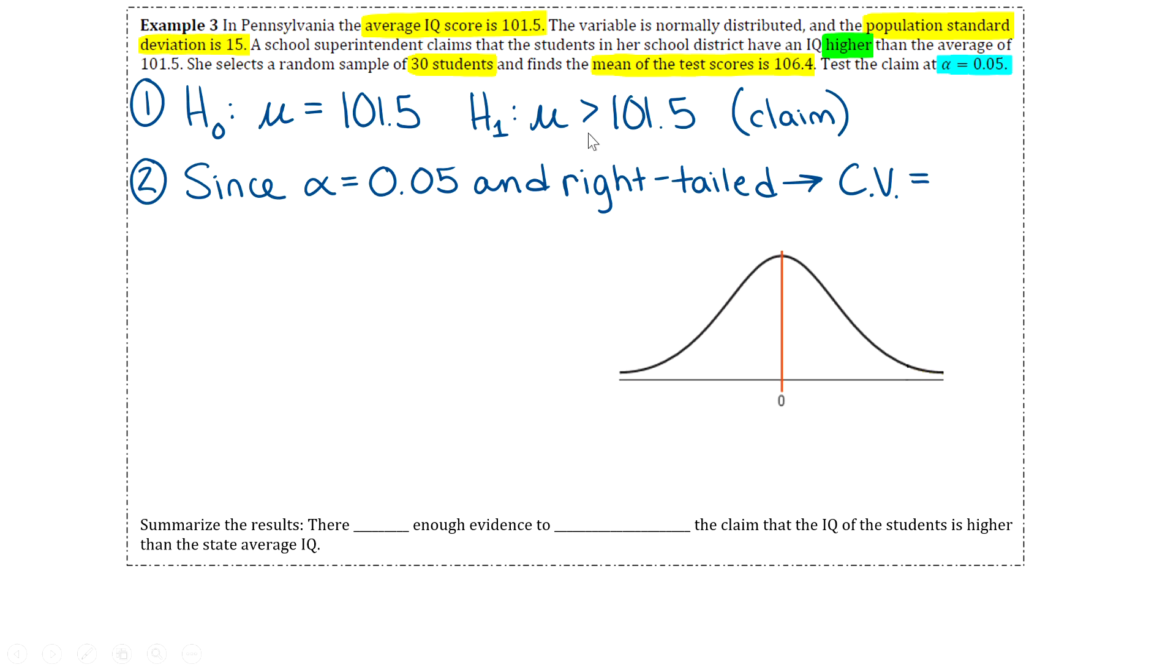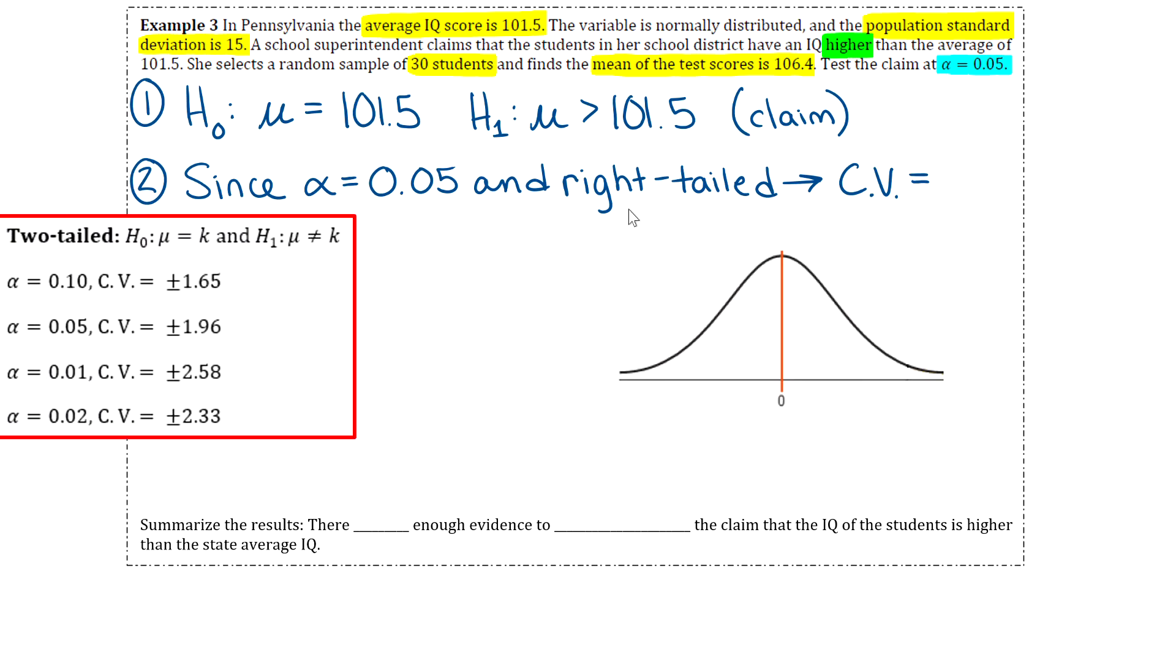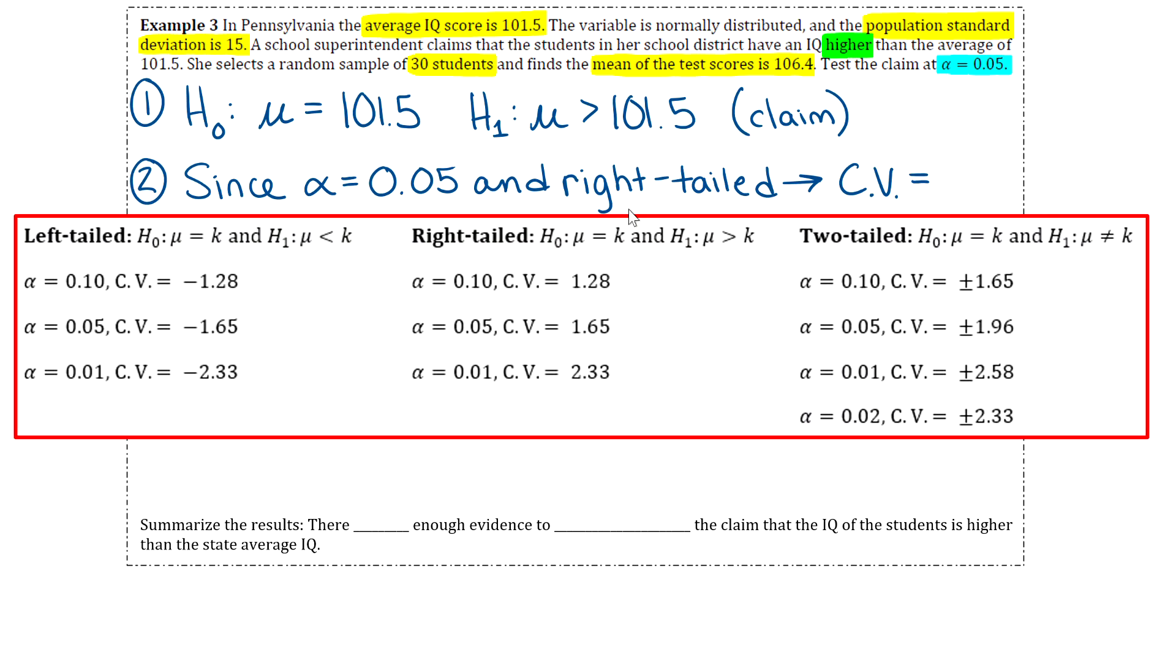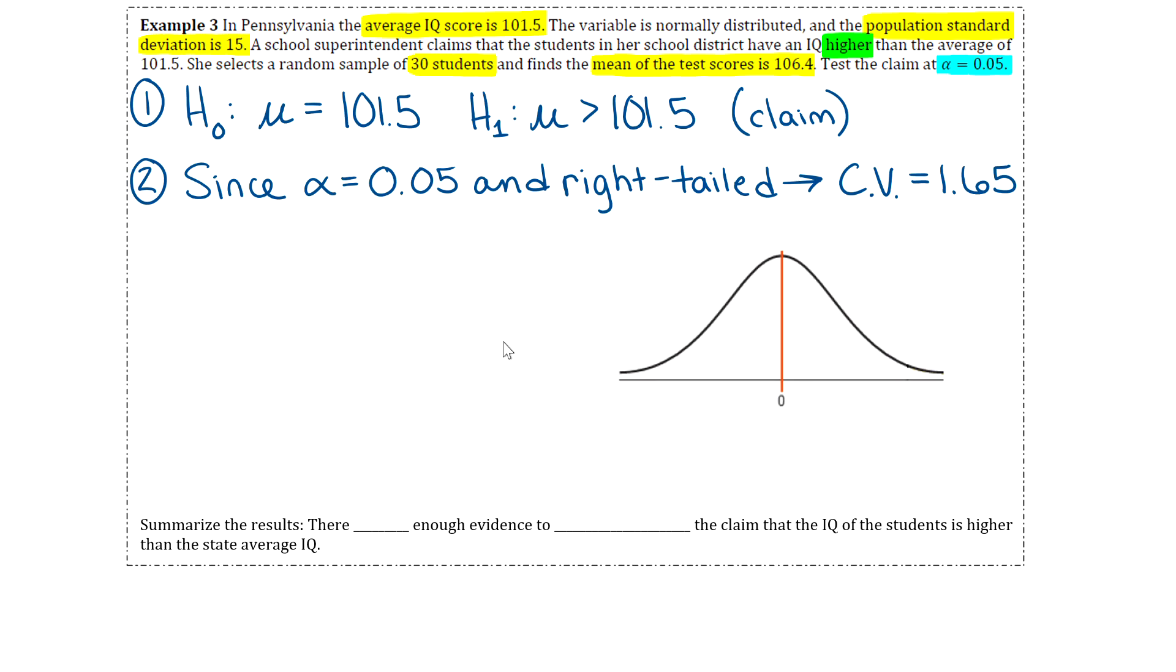If you think about where you would shade on a number line for greater than 101.5, you would shade to the right. So that tells you it's a right-tailed test. If you pull out that table or your notes from last section, be careful when you pick your critical value. It's a right-tailed test, so it's this middle column, alpha is 0.05. That tells us our critical value is 1.65. If you have that table handy, it'll definitely help you out because you won't have to do inverse norm and all that stuff to get that value.